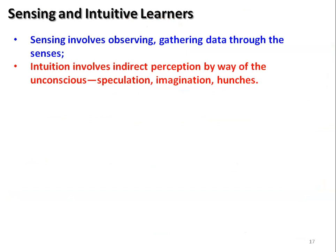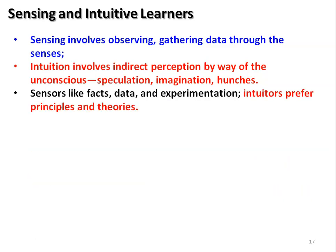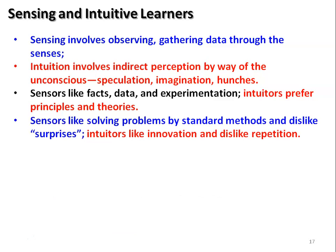Who are sensing and intuitive learners? Sensing involves observing and gathering data through the senses. Intuition involves indirect perception through unconscious speculation, imagination and reasoning. Sensing students like facts, data and experimentation, while intuitive learners prefer principles and theories. Sensing learners like solving problems by standard methods and dislike surprises — if you give them a step-by-step procedure, they will strictly follow and solve.